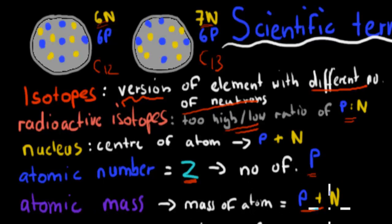Atomic mass is number of protons plus neutrons. So if we add those two together, 6 plus 6 is 12, that's why it's called carbon-12. 6 plus 7 is 13, that's why it's called carbon-13.